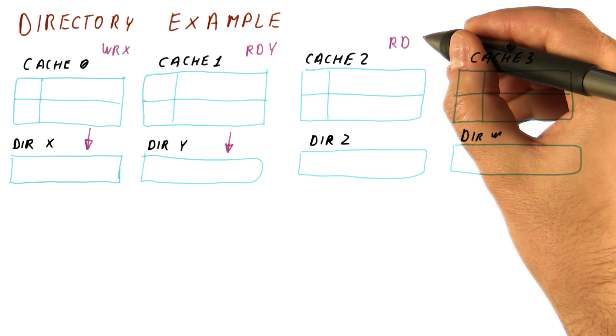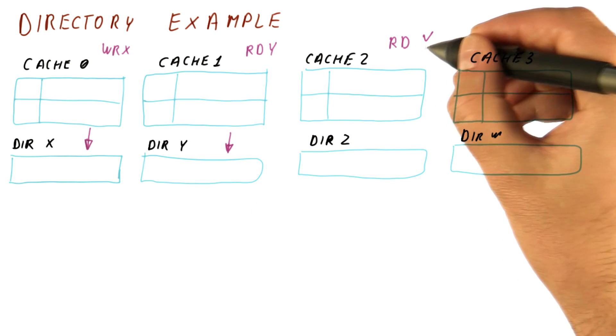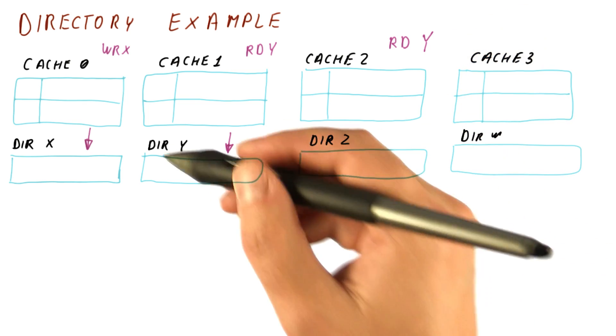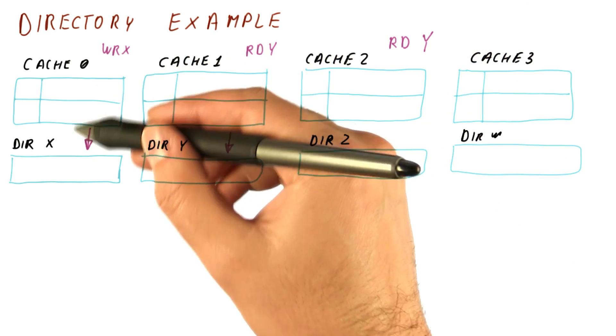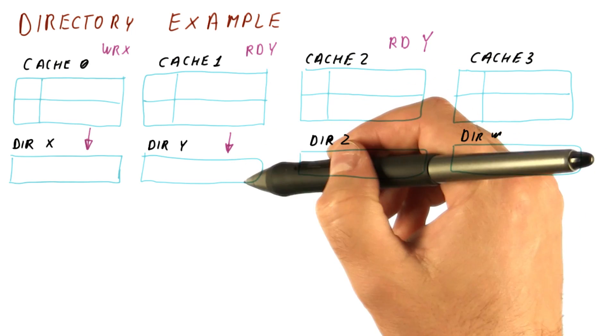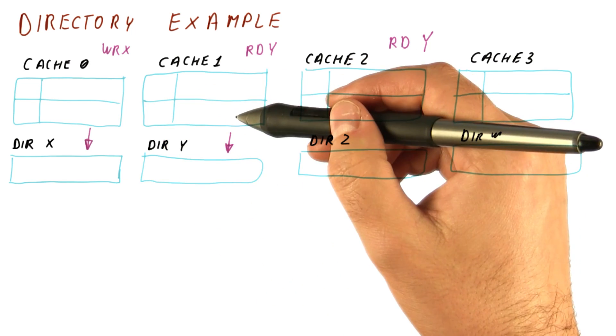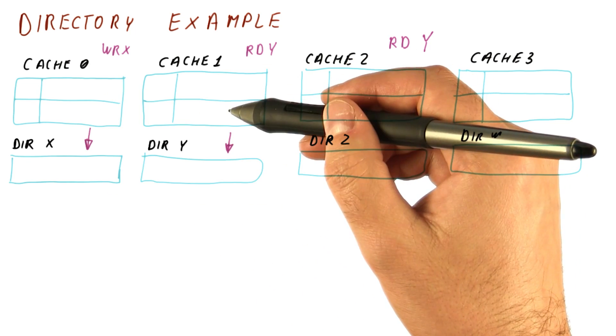Let's say that cache two also reads y at about the same time. So what happens now is the write to x and the read to y here are probably going to be processed at about the same time, completely independently by these directories.